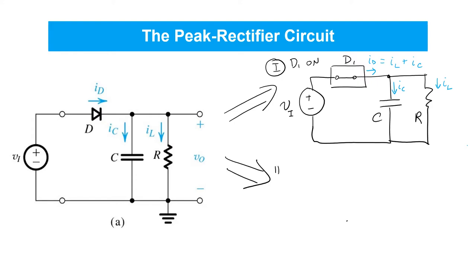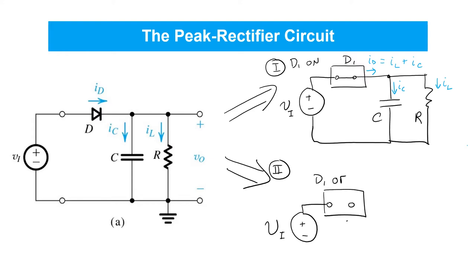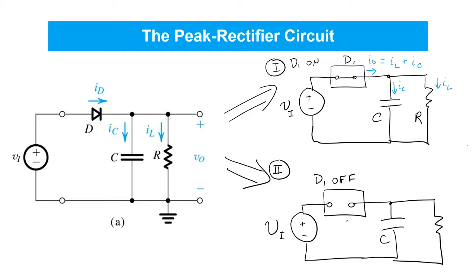Now let's consider what happens when the diode is reverse biased, which may arise when the voltages VI are small or negative. In such cases, using an ideal diode model, we would simply replace D1 with an open circuit. Now no current can flow through the diode. In the case of the simple half-wave rectifier, no current through the diode meant no current through the load. But that's no longer the case here. Now even when the diode is off, current can continue to flow from capacitor C through to the load resistor R.